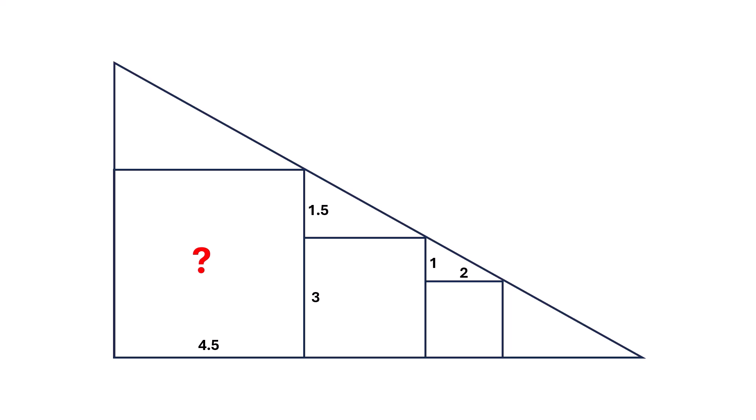To find the area, we simply square this value. 4.5 squared is 20.25. So, the area of the largest square is 20.25.